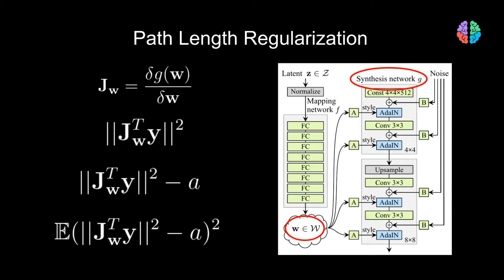We sum this regularization with the loss of the generator while training the network. Because this term is quite expensive to compute, they use this regularization only every 16 training iterations, and this is called lazy regularization in the paper.